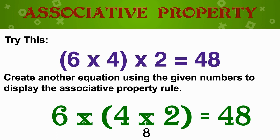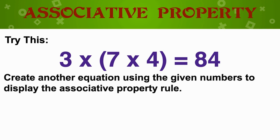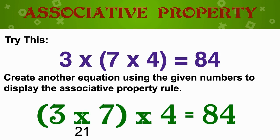Try this one: 3 times 7 times 4, grouping the factors 7 and 4, gives us a product of 84. Can you think of another equation using the given numbers to display the associative property rule? If you said grouping 3 and 7 first — 3 times 7 is 21 — and then multiplying 21 by 4, you also get the product of 84. You are correct!